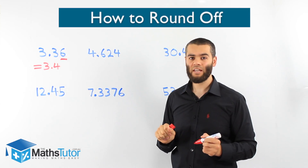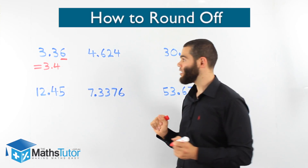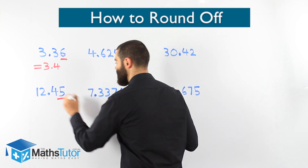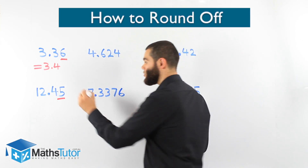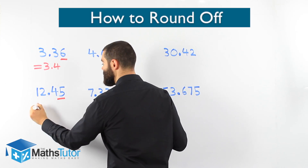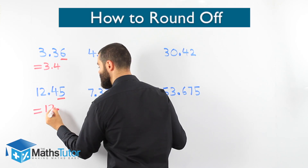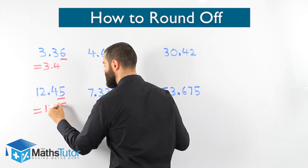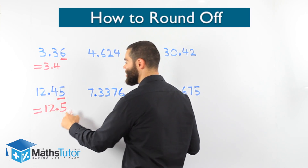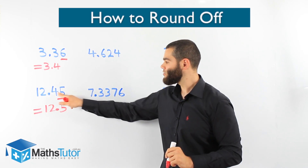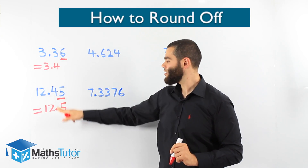12.45 — once again, round off to one decimal place. We look for the number on its right. Can you push us up? Do you have the muscles? 5 or more? Yes. So this 5 can push the 4 up, and it will be 12.5. The 5 pushes it up, it becomes a 5. So 12.45 has been rounded off to one decimal place as 12.5. The 5 has muscles to push it up.